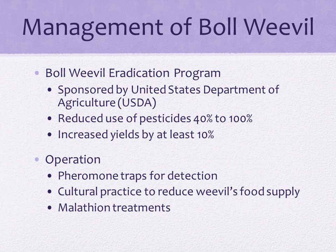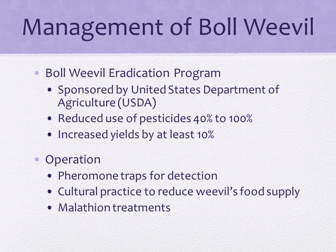Three main techniques are employed over a three-to-five-year period: pheromone traps for detection, cultural practices to reduce the weevil's food supply, and malathion treatments. The program progressively but effectively eradicated the boll weevil from cotton-producing states, primarily through aerial release of the insecticide malathion. Boll weevil infestation is estimated to have caused crop losses of 30 to 50 percent in infested areas. The eradication program led to increased crop yields by at least 10 percent and a dramatic decrease in the use of insecticides of 40 to 100 percent, leading to a reduction in production costs. In 2013, Texas was the only state to still have areas with boll weevil infestation.